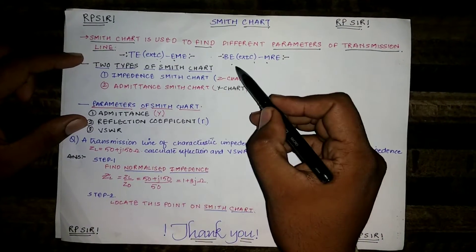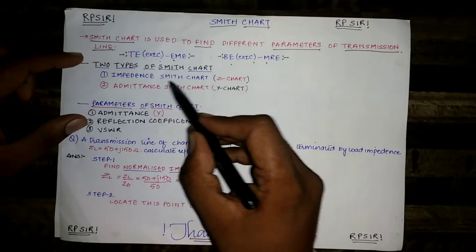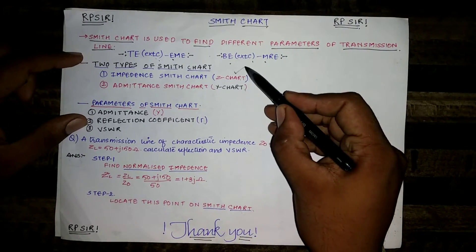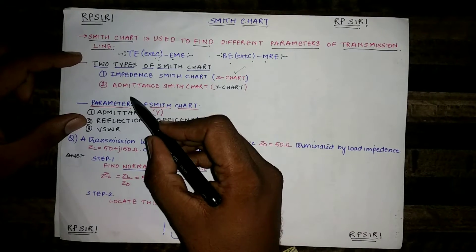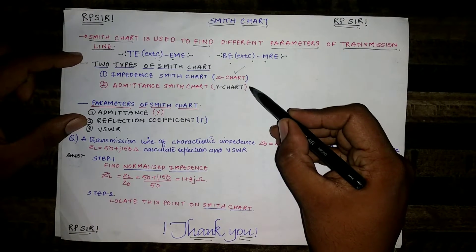There are two types of Smith chart. First is impedance Smith chart that is also called Z chart. Second is admittance Smith chart that is also called Y chart.